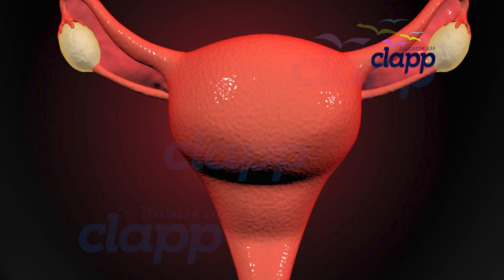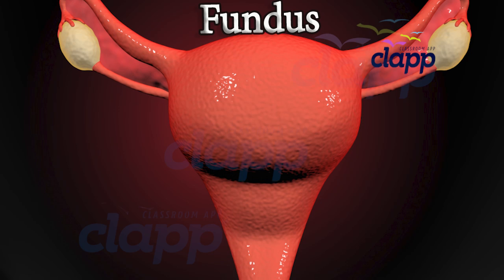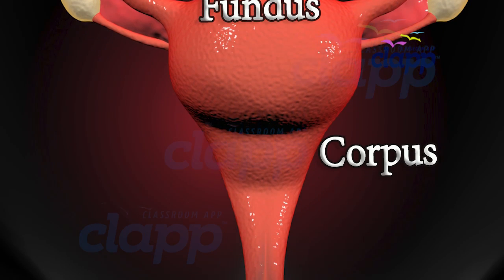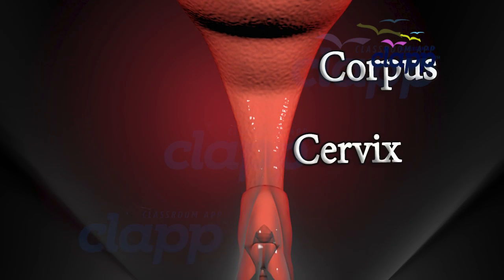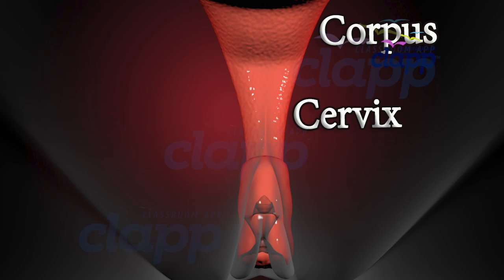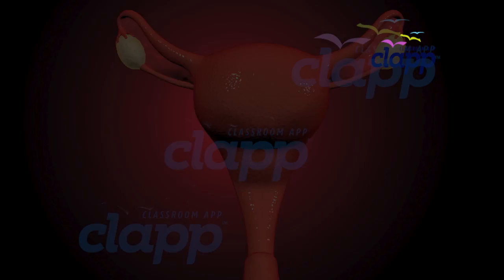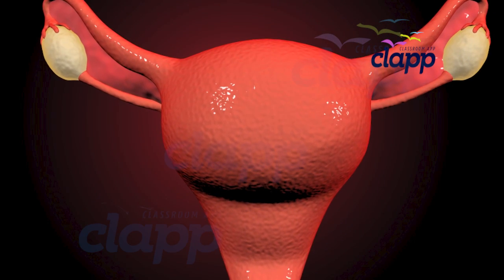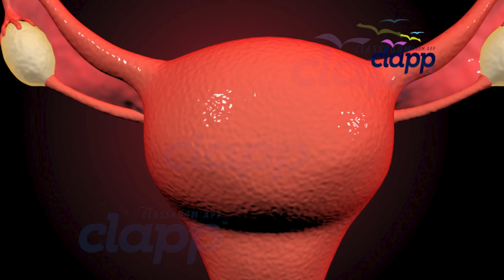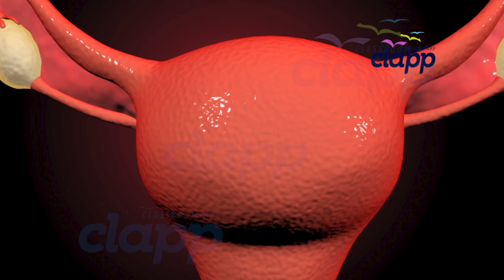It has an upper dome-shaped part called the fundus, a middle large part called the corpus, and a lower narrow cervix that projects into the vagina. Implantation of the embryo occurs in the uterine fundus, and it is the site of fetal growth during pregnancy.